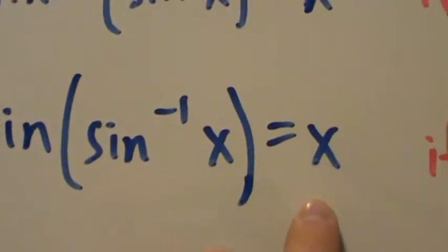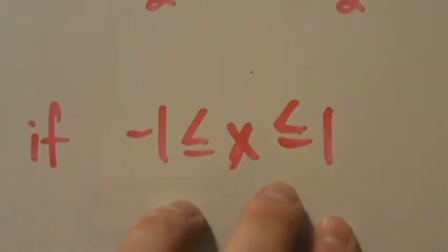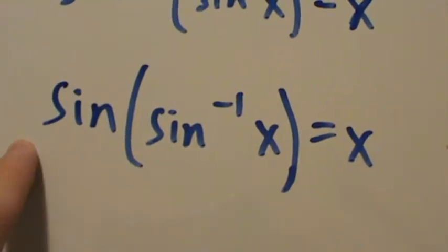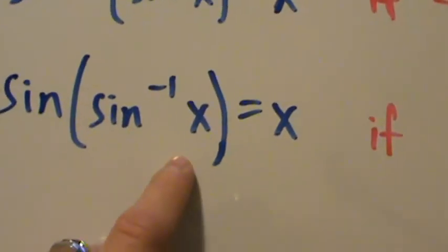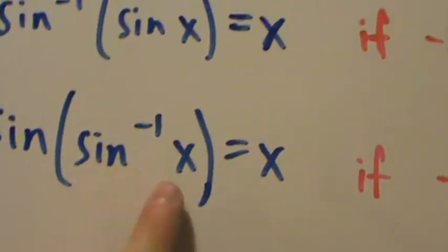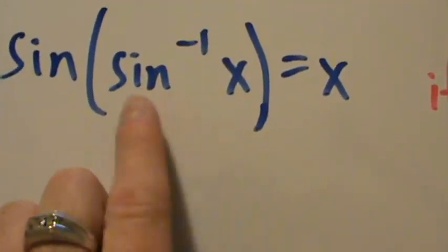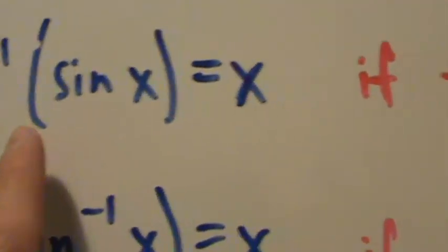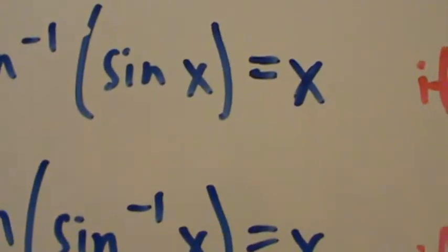Similarly, sine of the inverse sine of x equals x if x is between negative 1 and positive 1. If x is not between negative 1 and 1, you actually just can't do this, because the domain of the inverse sine function is from negative 1 to 1. In order for the inverse sine of x to even make sense, x has to be between negative 1 and 1. Up here, even if x is not between negative and positive pi over 2, we can still compute — we just can't cancel.